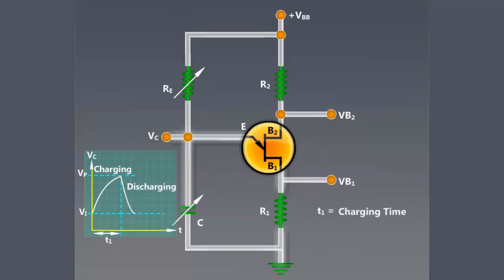Here T1 is the charging time. This charging time depends on emitter resistor RE and charging capacitor C. Therefore, T1 is equal to RE C into log of V minus VI divided by V minus VP.